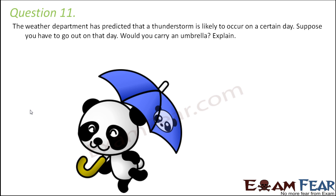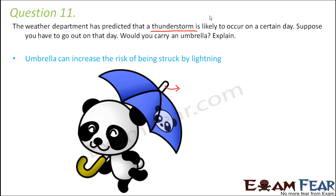Question number 11: The weather department has predicted a thunderstorm. Suppose you have to go out — would you carry an umbrella? Whenever there is a thunderstorm, there are chances of lightning. Carrying an umbrella increases the risk because umbrellas contain metal parts, and metals are good conductors of electricity. The charges will flow through the conductor, increasing your chances of getting an electric shock. So an umbrella increases the risk of being struck by lightning — it is advisable not to carry one.